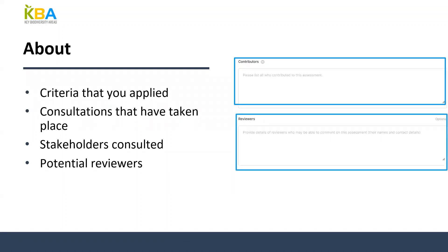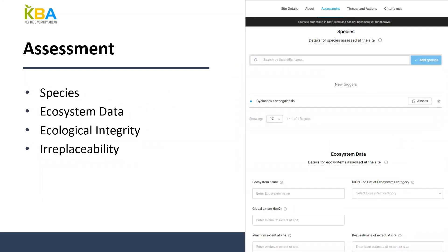The Reviewers field is optional — here you can list names and contact information of potential independent reviewers who can validate the proposal. Now moving on to the Assessment tab. In the Assessment tab you will need to input data related to all KBA criteria. You will find sections for species-based and ecosystem-based data, including criteria related to ecological integrity and irreplaceability. However, today we will only focus on species and ecosystem data. Ecological integrity and irreplaceability will have their own targeted webinars later on.